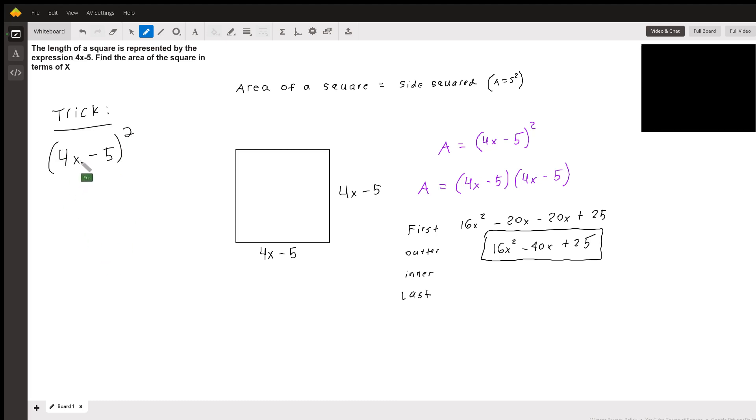just square the first term to get the first term. So 4x squared is just 16x squared. Then multiply these two numbers inside the binomial, 4x times negative 5 to get negative 20x,